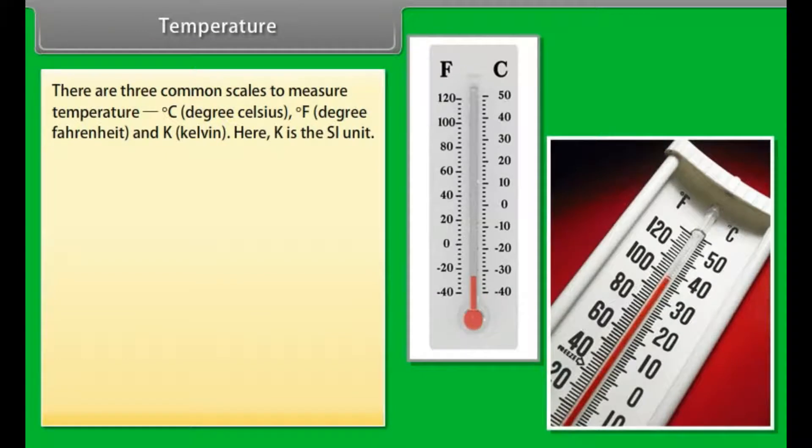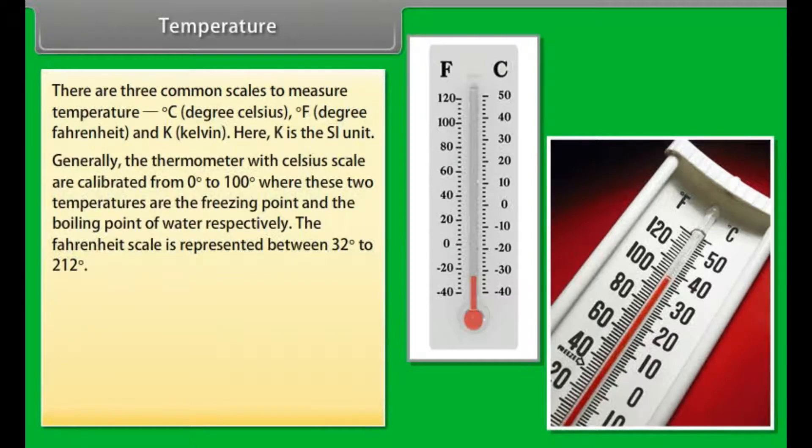Temperature: There are three common scales to measure temperature: degree Celsius, degree Fahrenheit, and Kelvin. Here, K is the SI unit. Generally, the thermometer with Celsius scale are calibrated from 0° to 100°, where these two temperatures are the freezing point and the boiling point of water respectively. The Fahrenheit scale is represented between 32° to 212°.